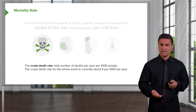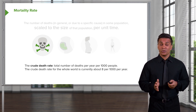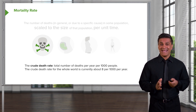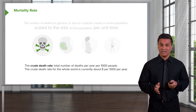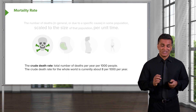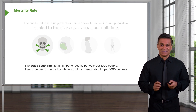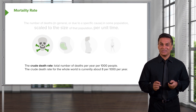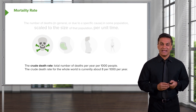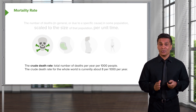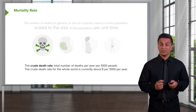The crude death rate for the whole world is currently about eight people per 1,000 people per year, and that's actually come down. So that's one of the nice things about studying epidemiology — we can tell when things are getting better. In the last few decades and centuries, the crude death rate of the world has actually come down. People are dying less globally.